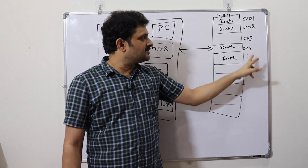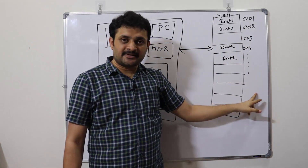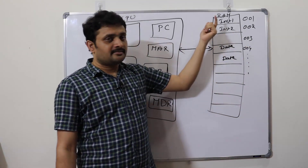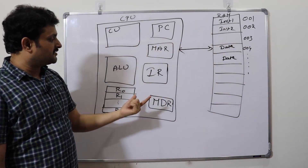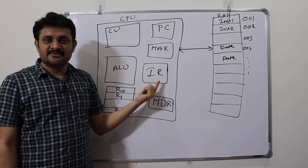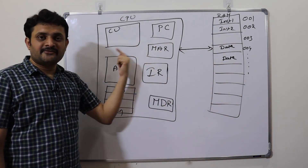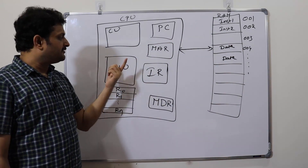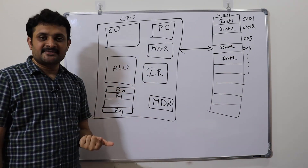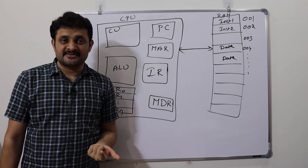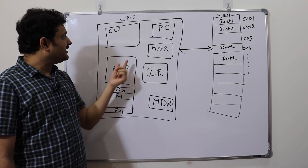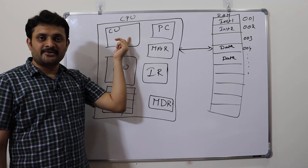These are all different address locations of this particular memory. In the CPU, we have various registers — special purpose registers and general purpose registers — along with an ALU and a control unit. Let us discuss the individual parts of this CPU.